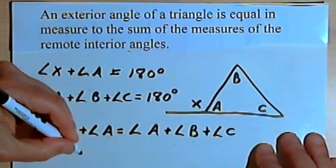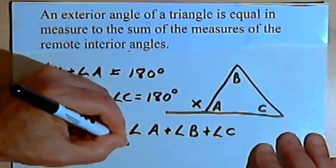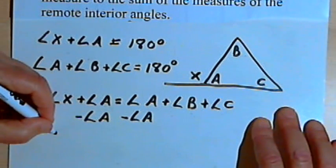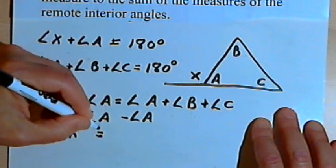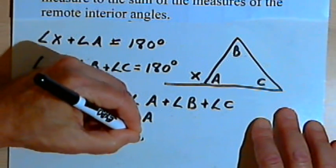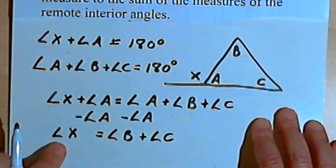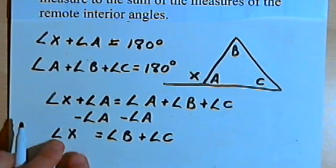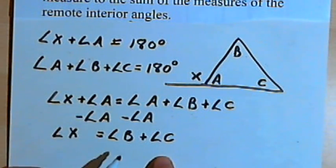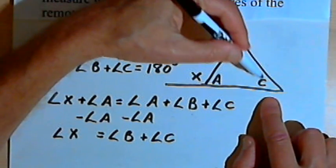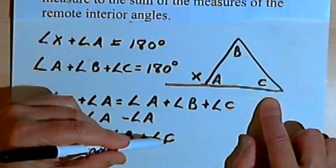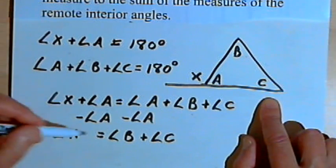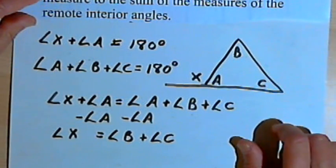And now all I've got to do is subtract angle a from both sides of the equation. When I do that, it's going to leave me with angle x equals angle b plus angle c. Angle x is the exterior angle, and the size of that exterior angle is equal to the sum of the two remote interior angles, angle b and angle c. So the exterior angle is equal in measure to the sum of the measures of the two remote interior angles.